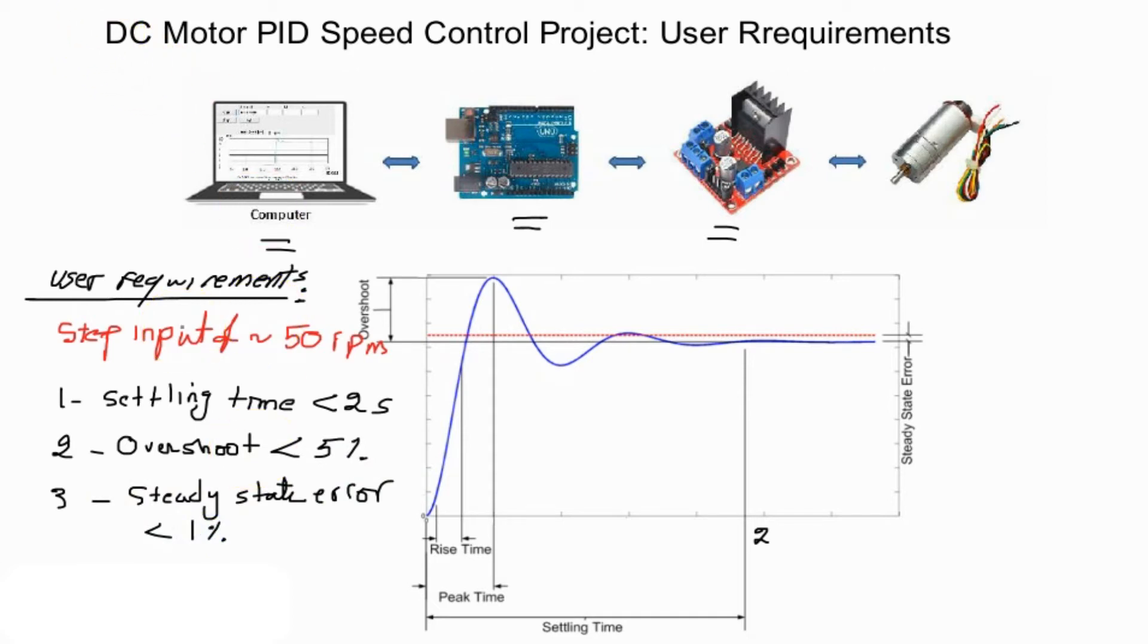Now the settling time is the time taken for the signal to be bounded to within a certain tolerance percentage. Sometimes it's used as 5 percent and sometimes it's used as 1 percent. Here we are assuming that the red line is our desired step input at 50 RPM.